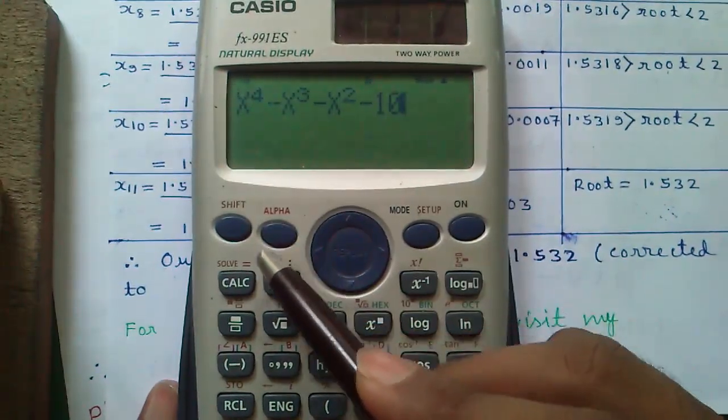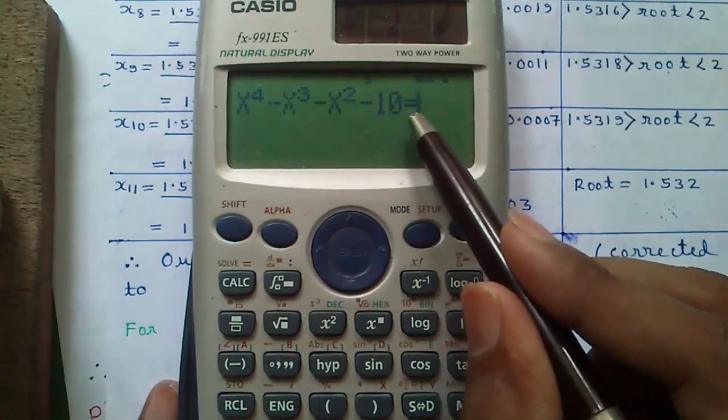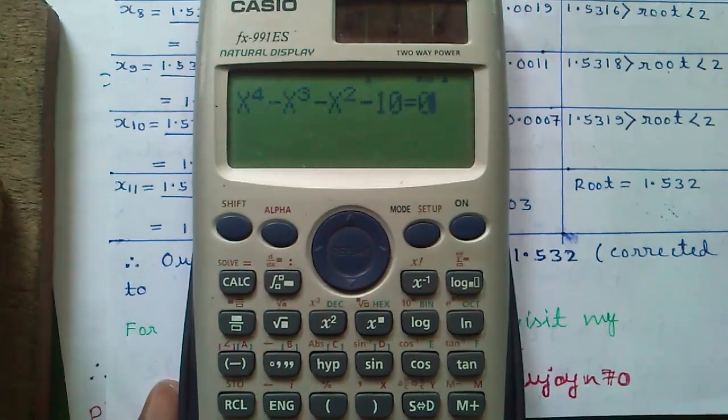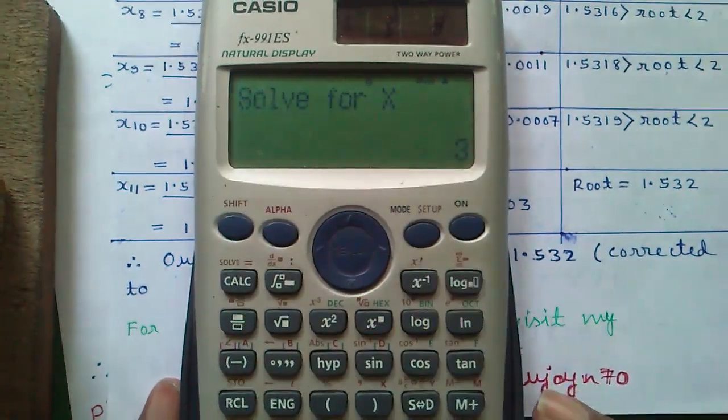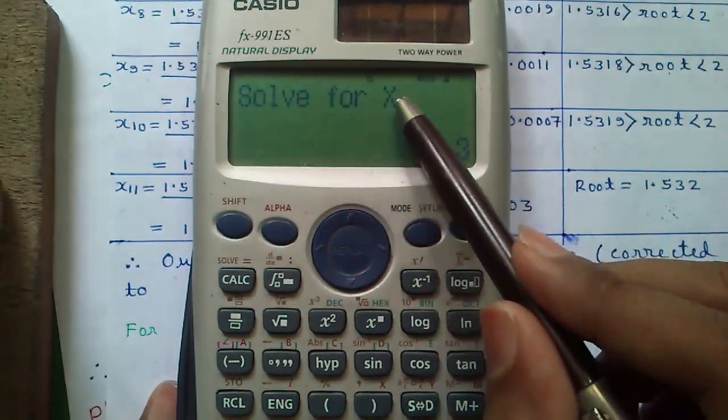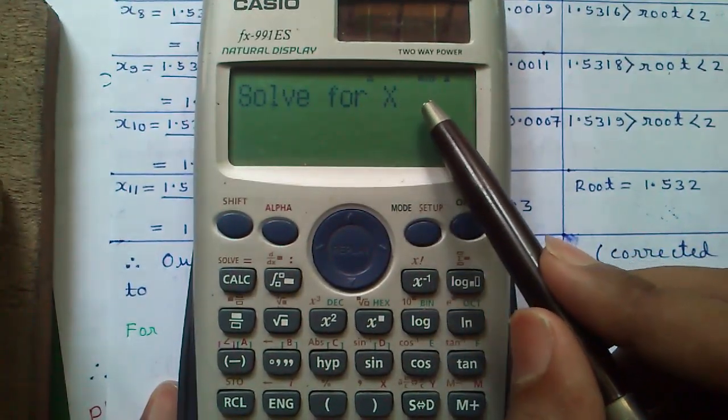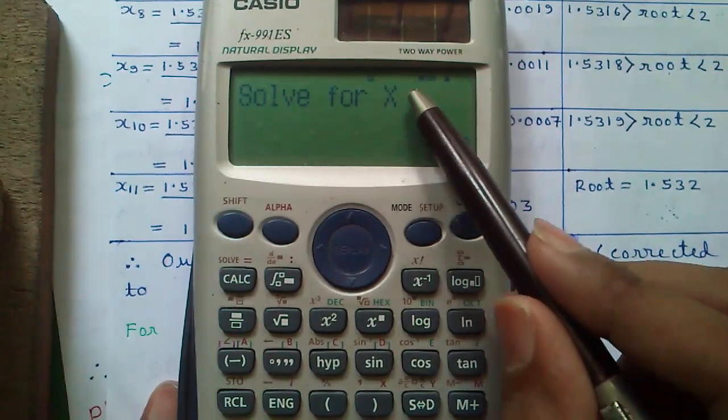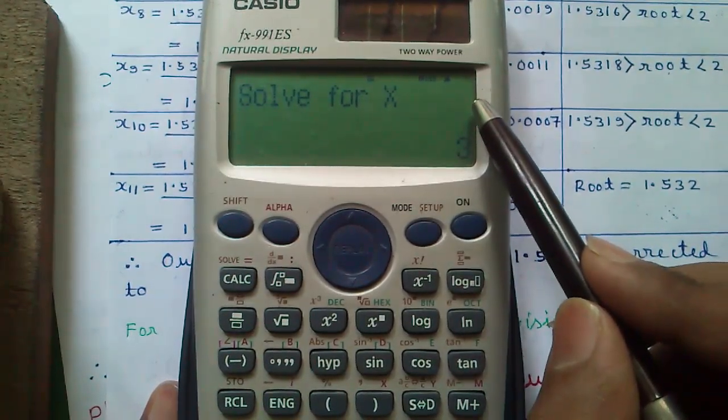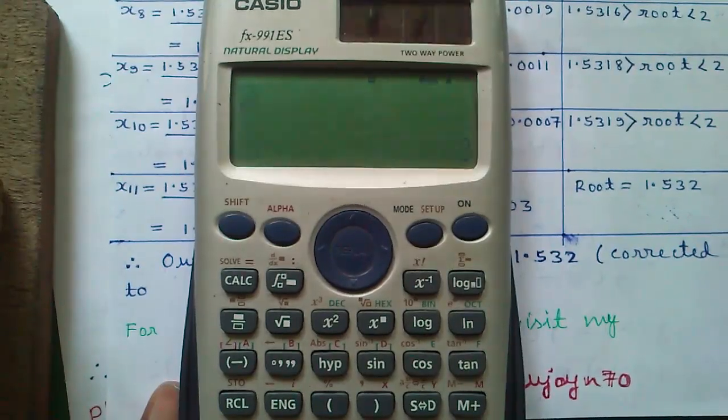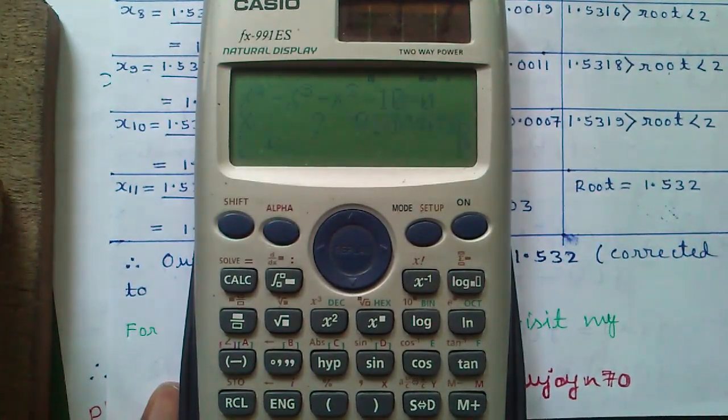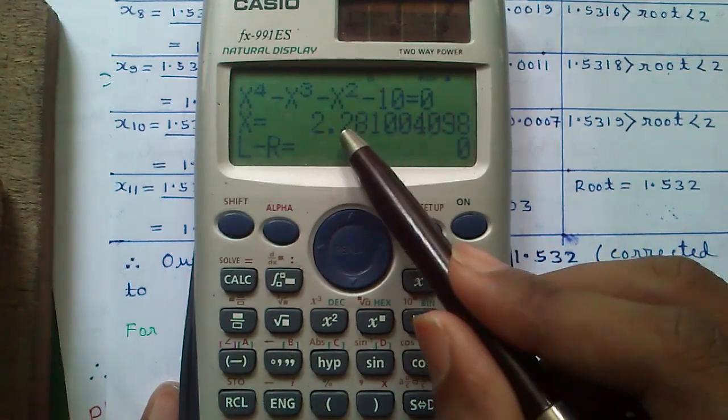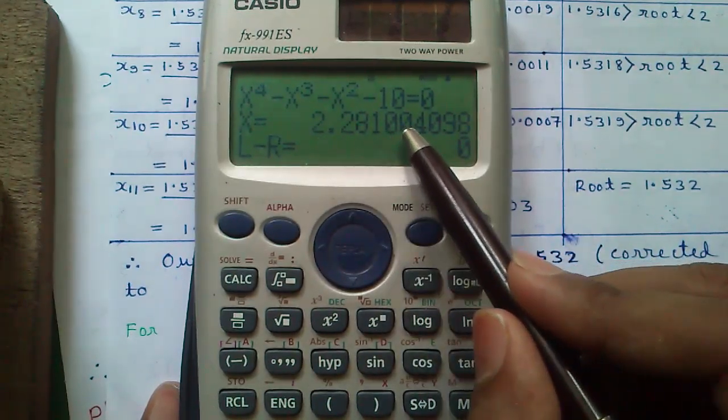Now press alpha and this calc button to get the equals to sign and enter 0. And now we will solve it. So press shift and calc. And now in solve for x value, enter either the lower range of the root, that is 2, or the upper range of the root, that is 3. Let's enter the lower range and press equals to. So our root is 2.28100.